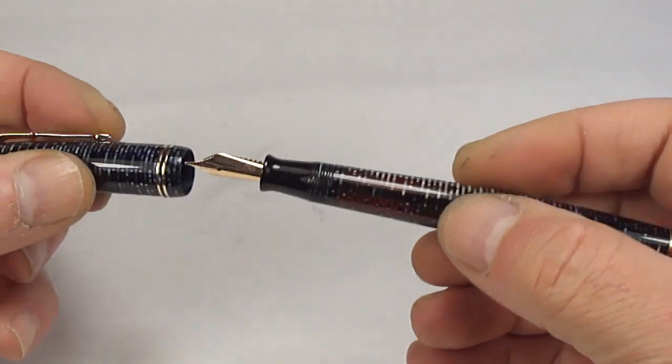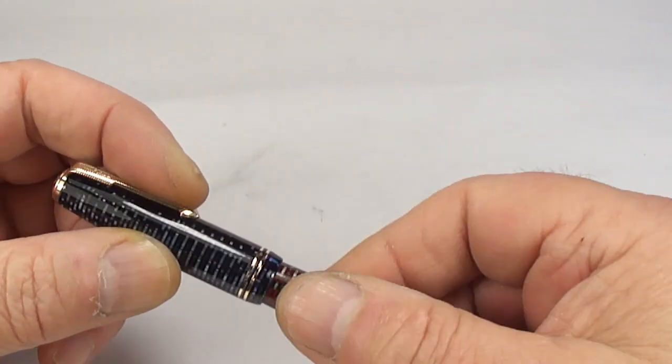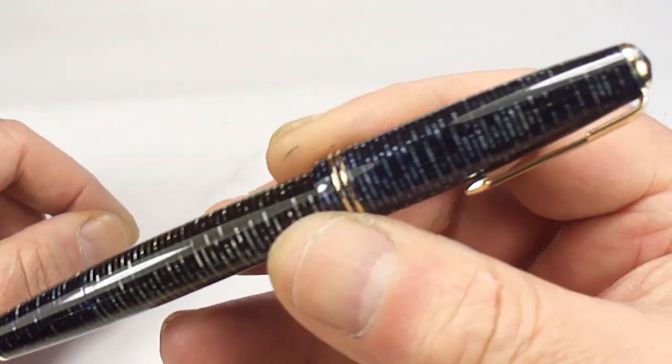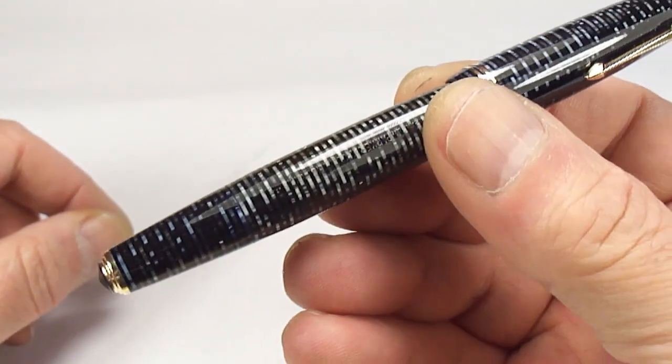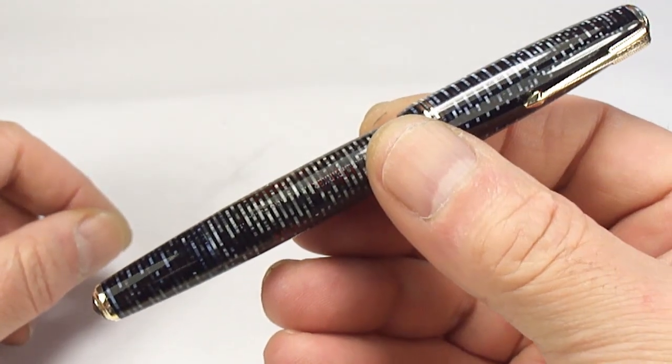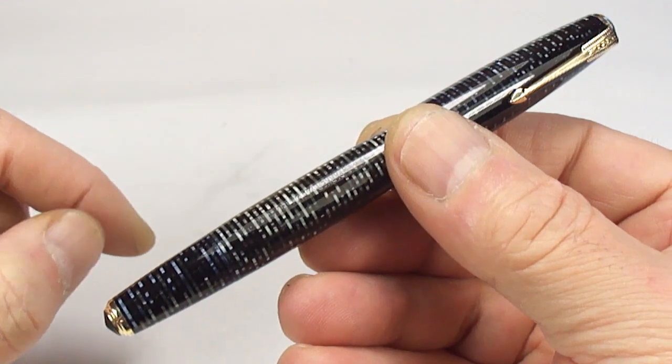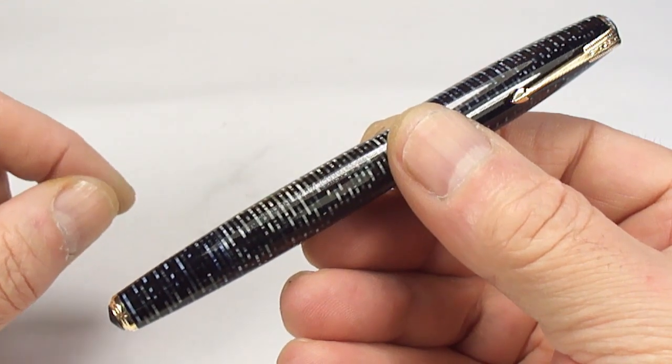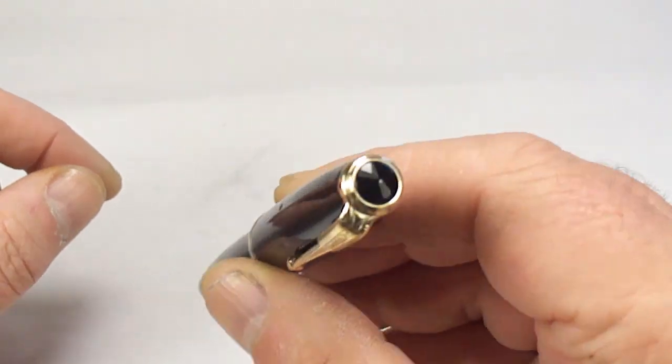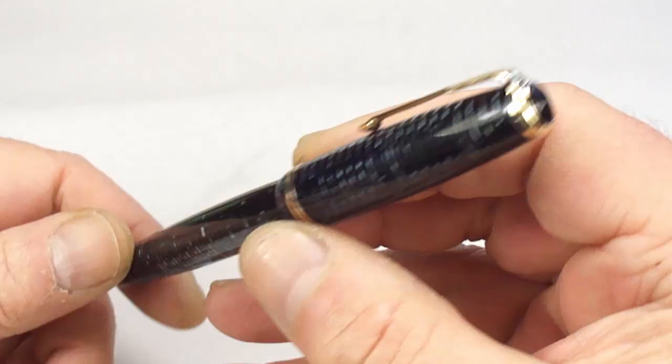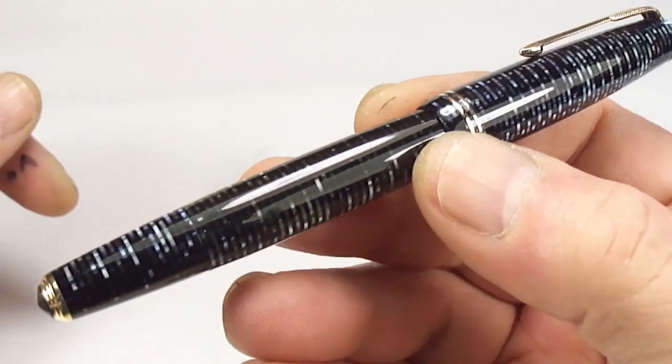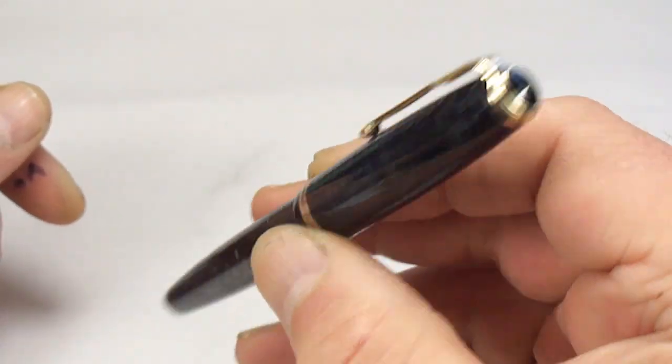Let me pop that to one side and flush the nib out once we finish the video. So there we have it, an absolutely stunning Parker Vacumatic Junior in this lovely azure blue pearl with gold plated trim in absolutely stunning condition.